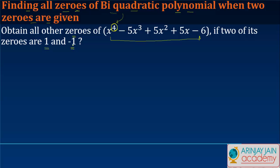Now if 1 and -1 are zeros of the given polynomial, it means that (x + 1) as well as (x - 1) should be factors of this polynomial.